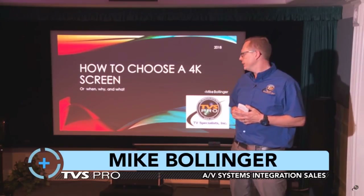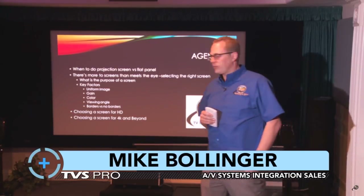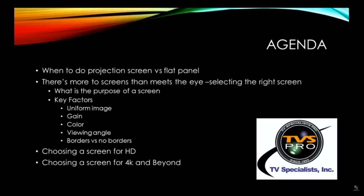Here are some of the things we're going to talk about: first of all, when to do projection, when to do flat panel — there's a lot more screen technology than people really realize or understand. We're going to talk about the purposes of really what a screen is doing, and then some of the factors of the screen materials themselves — how they can create a uniform image, what gain is, how they interact and can affect color, viewing angle, as well as borders or no borders, and then choosing a screen for HD and 4K.